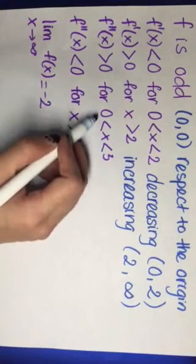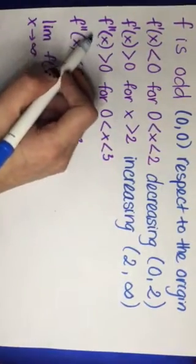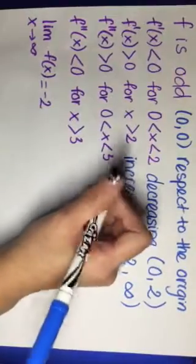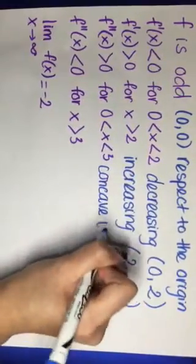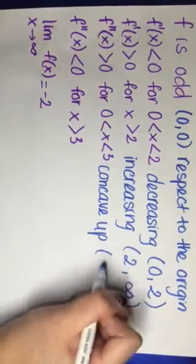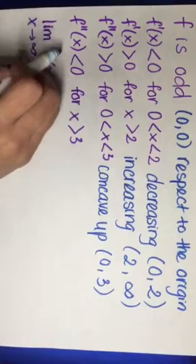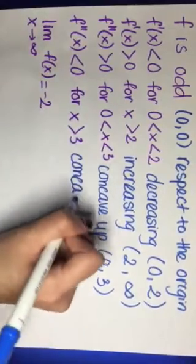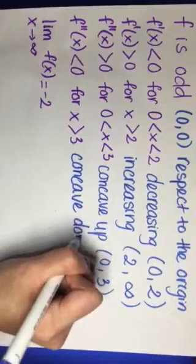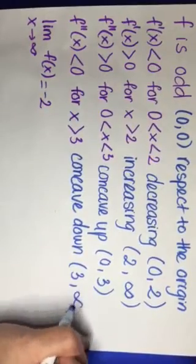The second derivative is greater than zero for X between zero and three, which means the graph is concave up from 0 to 3. The second derivative is less than zero for X greater than three, which means the graph is concave down from 3 to positive infinity.